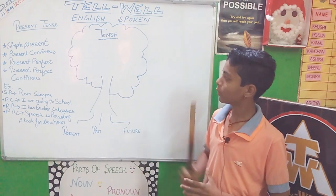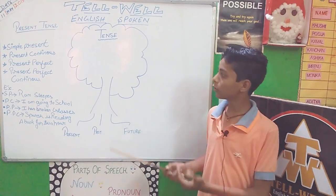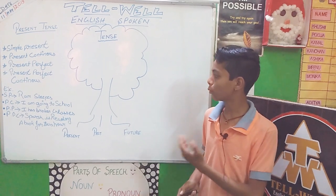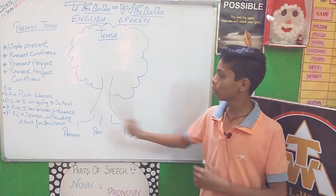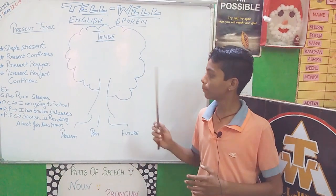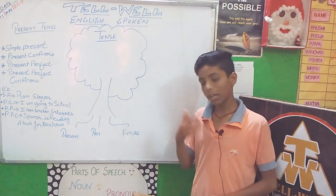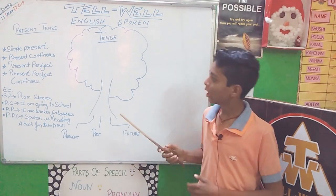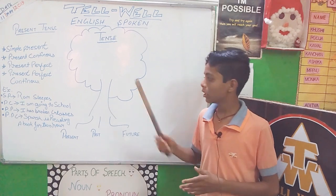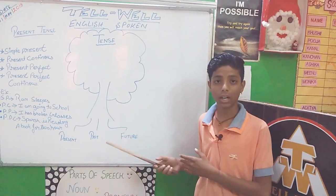Examples: Simple Present — Ram sleeps. Present Continuous — I am going to school. Present Perfect — I have broken my glasses. Present Perfect Continuous — He is reading a book for two hours.